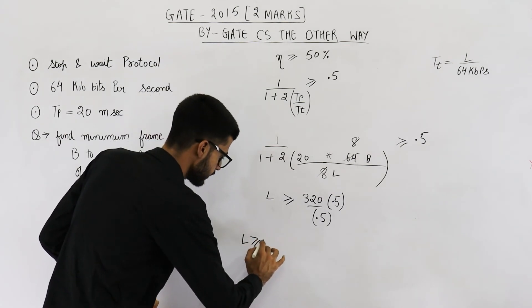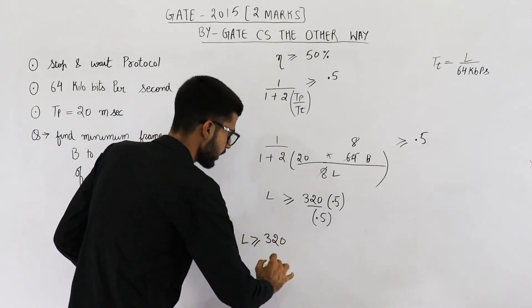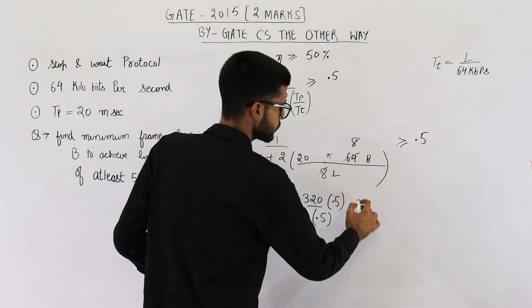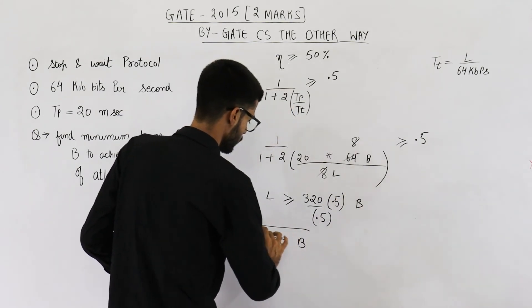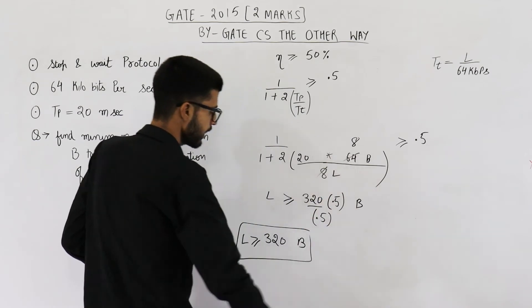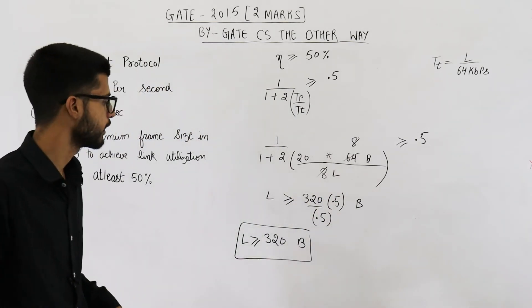So L is greater than or equal to 320 and the unit is bytes. See it is bytes. So here also it will be bytes and here also it will be bytes. L is greater than or equal to 320 bytes.